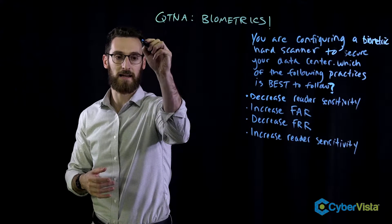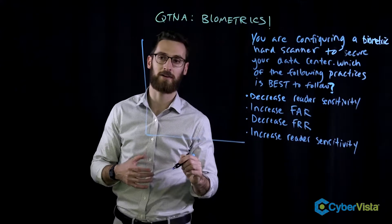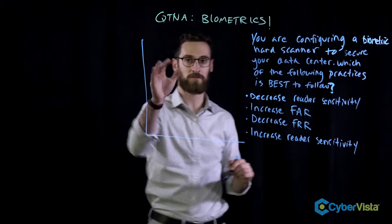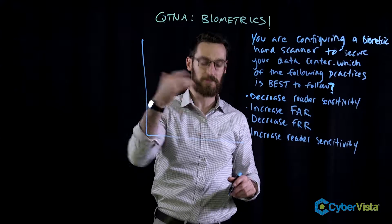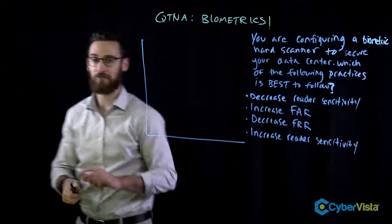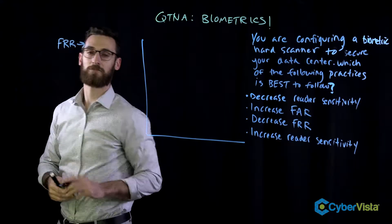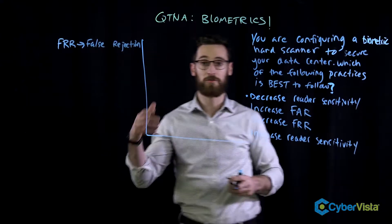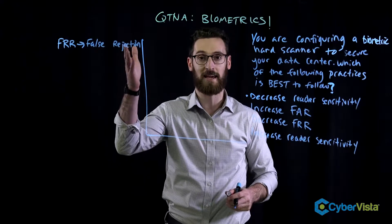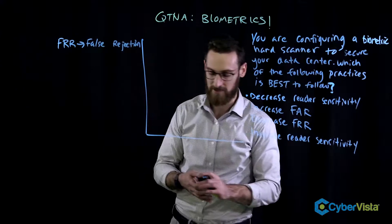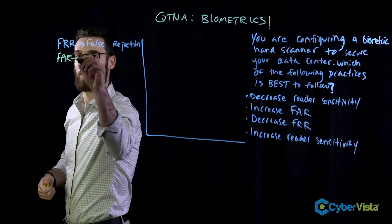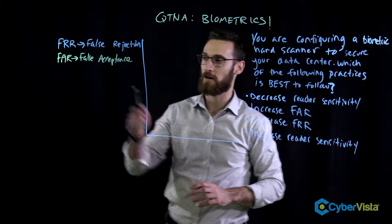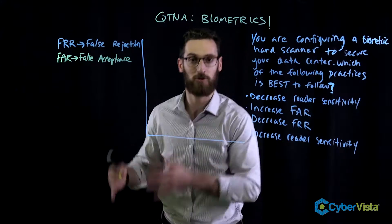To understand the biometric scanner configuration settings, let's plot an X and Y axis. There are two types of errors you need to understand. There's an FRR, which stands for false rejection rate — that means you should have been authenticated but you were actually rejected. Then there's an FAR, which stands for false acceptance rate, where you should not have been accepted, but you were.